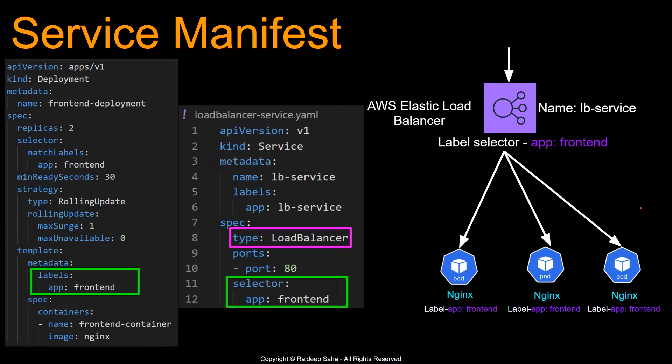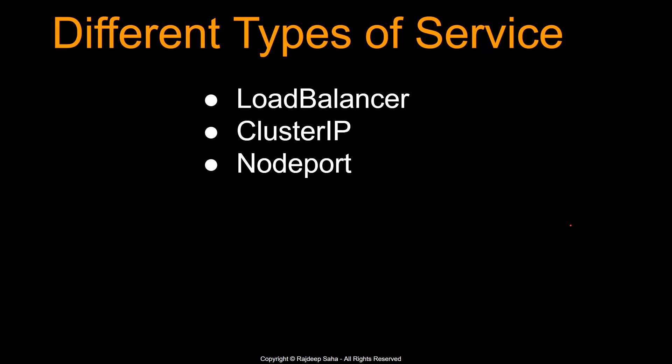This service is used extensively in Kubernetes, whether in EKS, Google Cloud, or Azure, because you barely expose any pod using its IP address — there will always be a service in between.